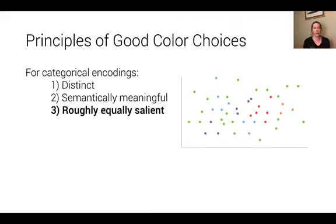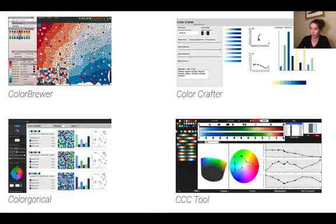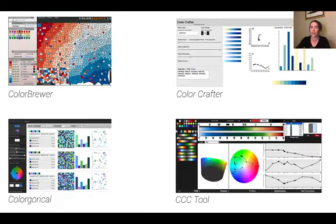Those are some basic ideas around how to choose effective color. At the end of the day, these are ideas that will help you assess whether an encoding is effective. Developing and designing color encodings is a challenging problem, but there are a wealth of tools: systems like ColorBrewer with hand-designed palettes by professional designers, Color Crafter for generating sequential encodings, Colorgorical for categorical data, and the CCC tool — a fully featured suite for really manipulating the nitty-gritty of your color representations. Play with these tools as you think about how to represent your data effectively using color.